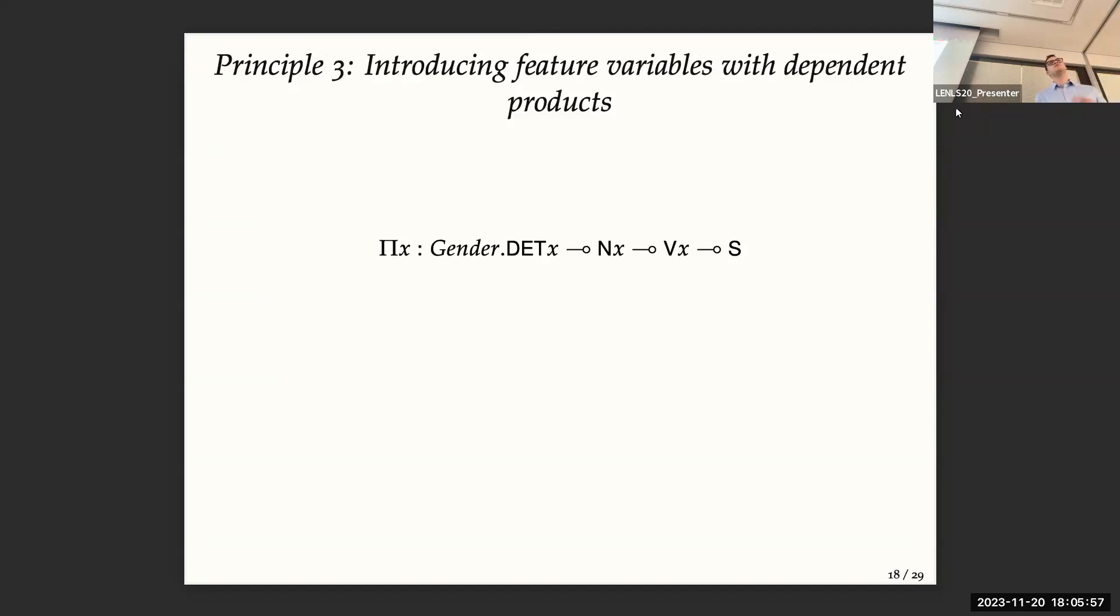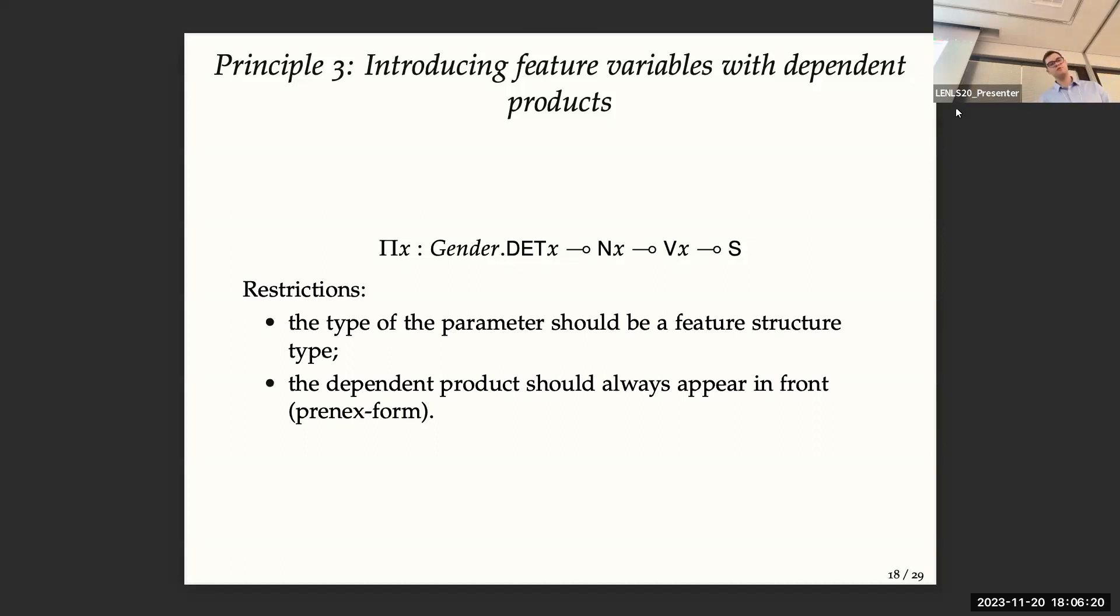But it's not enough because if you want to factorize grammars, you need also variables. And this can be done with dependent products. So here we have a basic definition of the agreement in type theory. But we have to be very careful to not break the properties, because with general dependent type theory, parsing becomes undecidable. So we put several restrictions on this dependent type. So first, the type of a parameter should always be a feature structure type, and feature structures are always finite. This is very important. And we use a prenex form. So basically, you will have a sequence of pi and then your types. You cannot have a pi inside this functional type.